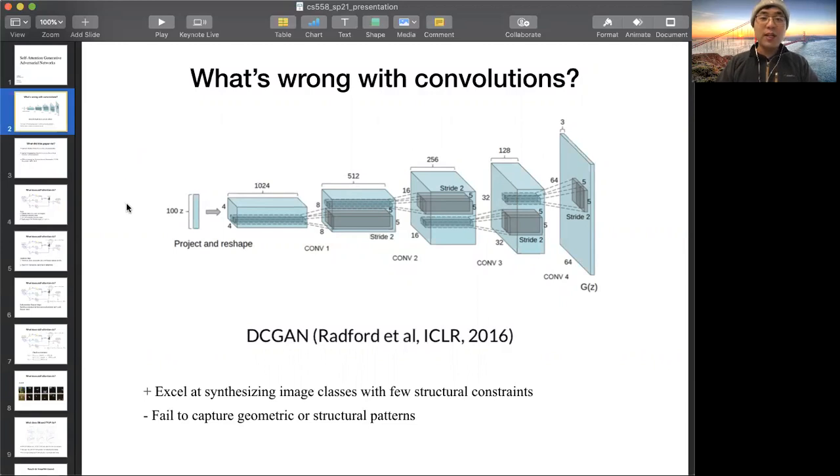Both of them use the conventional convolutional network. So what's wrong with that? At first, it does excel at synthesizing image classes with fewer structural constraints. However, it fails to capture the geometry or structural patterns.